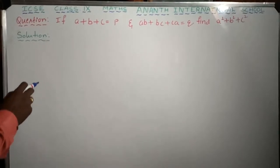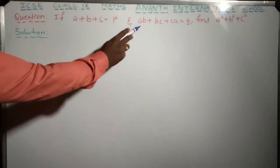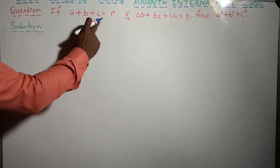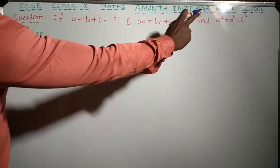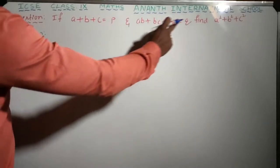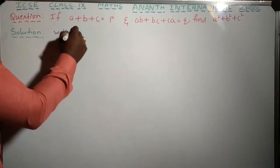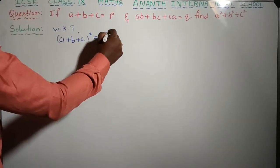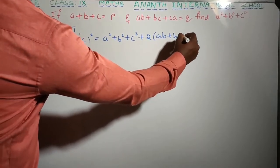Let's do one more problem, dear children. I will read the question: If a plus b plus c is equal to p, and ab plus bc plus ca is equal to q, find the value of a squared plus b squared plus c squared. Here, the sum of a, b, c equals p and the sum of products ab plus bc plus ca equals q. We are going to find the sum of their squares. I will write down the identity in the solution part: a plus b plus c whole squared equals a squared plus b squared plus c squared plus 2 into ab plus bc plus ca.